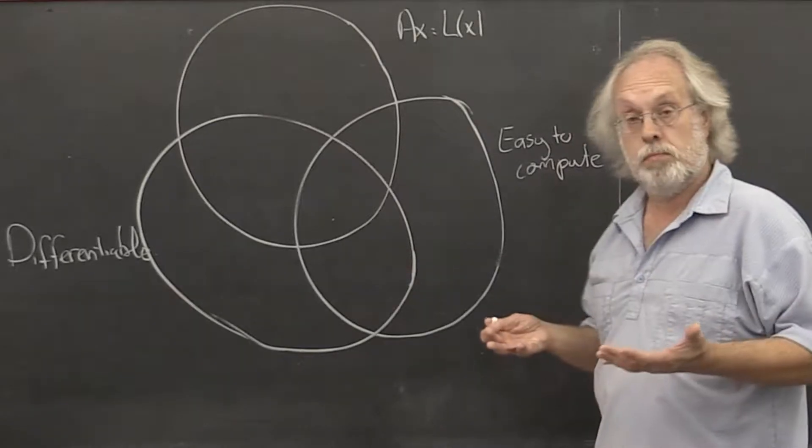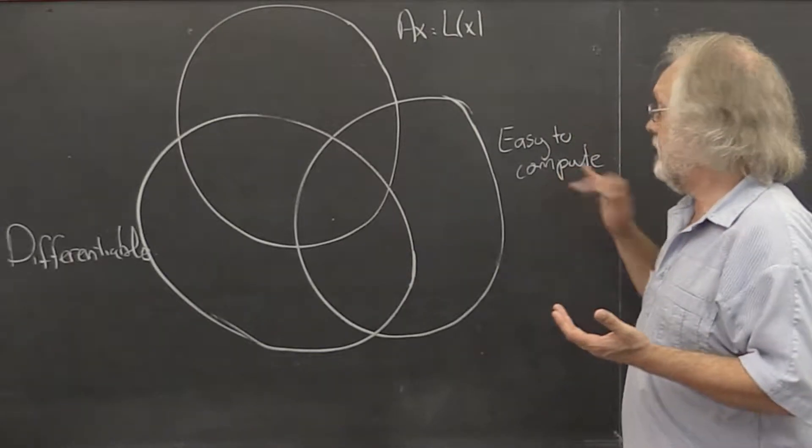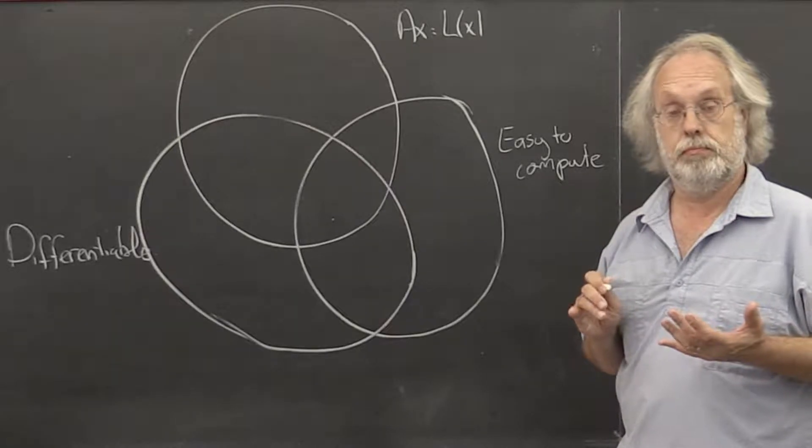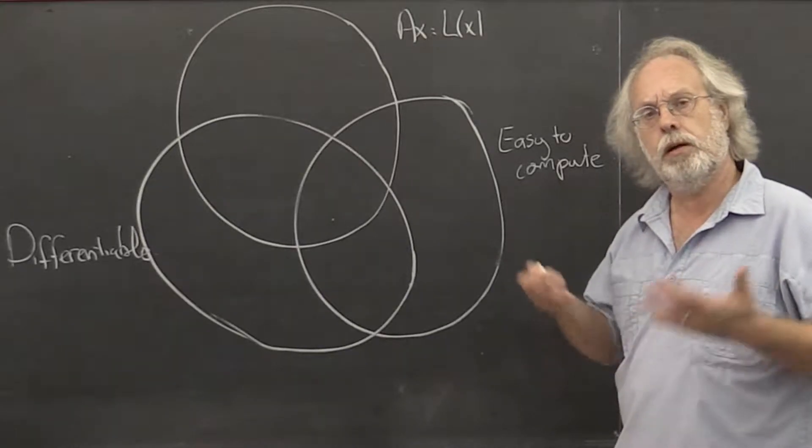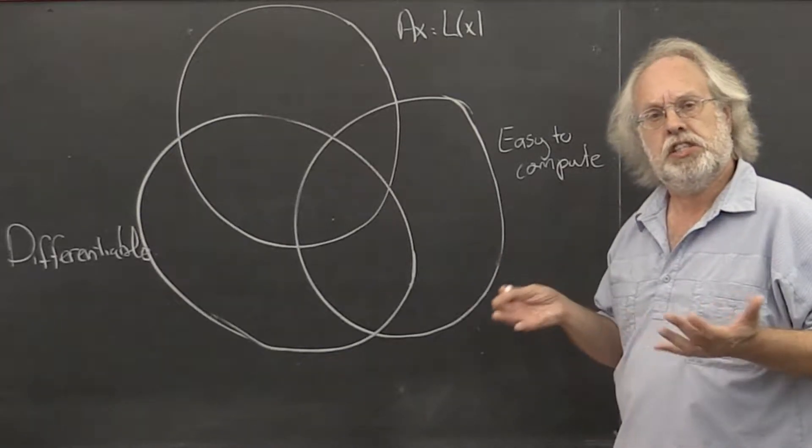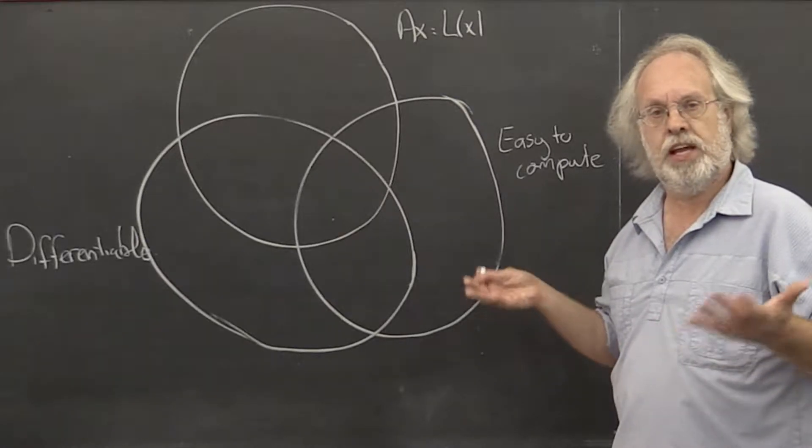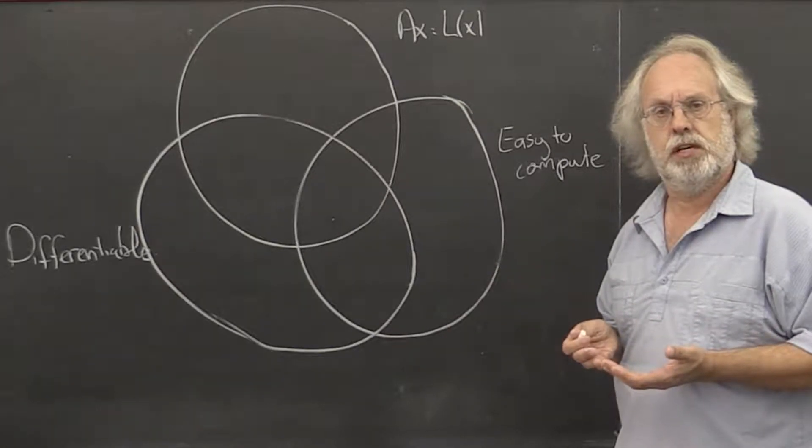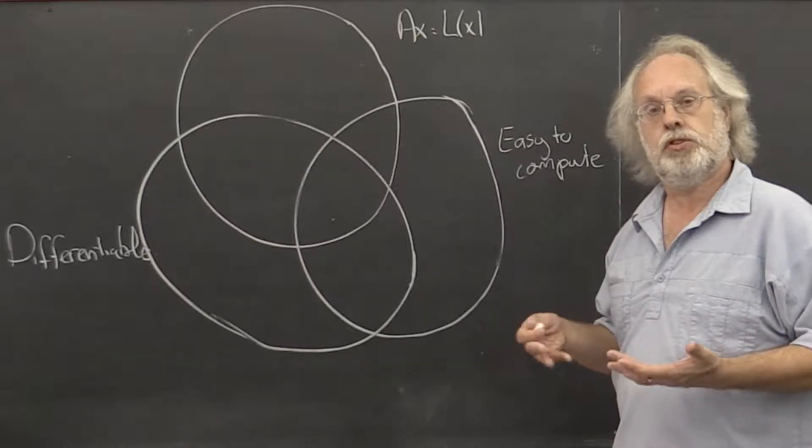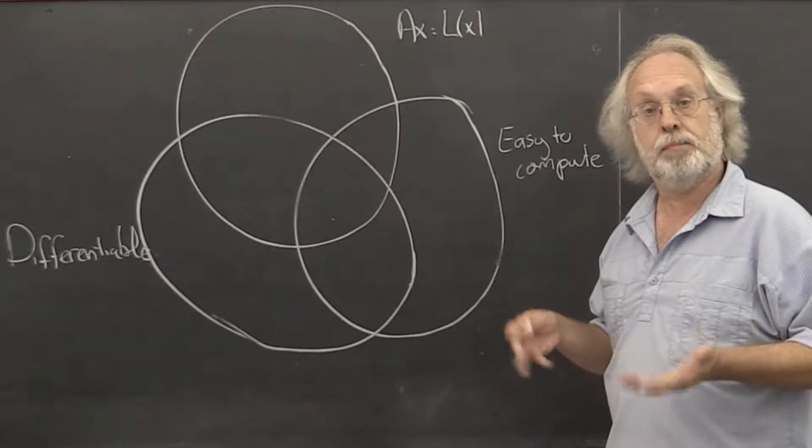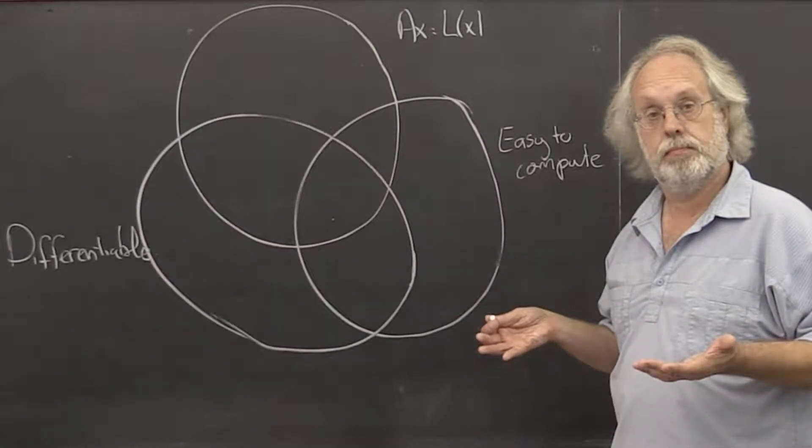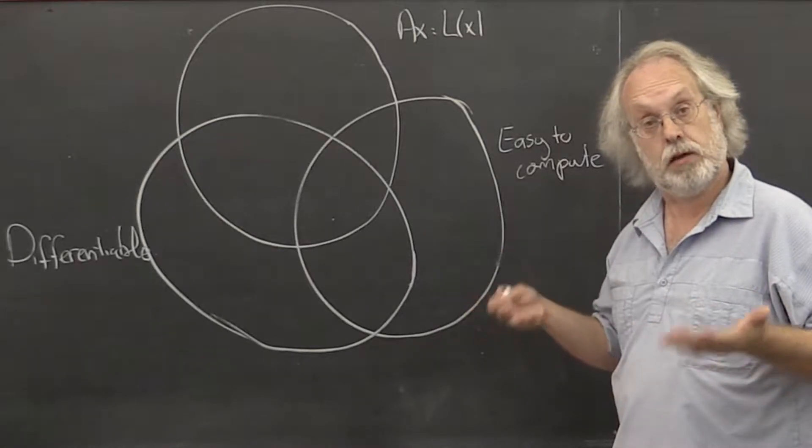There are other norms that are merely easy to compute. What do we mean by easy to compute? Well, the matrix is typically an m by n array of entries. It would be nice to be able to compute its magnitude in order m times n time or m times n computations.